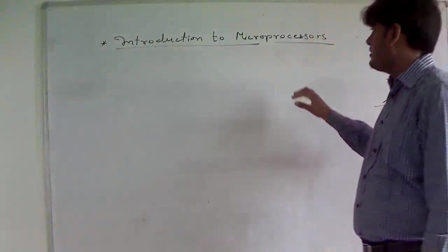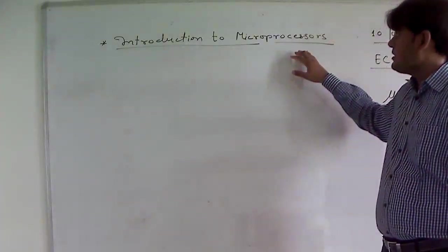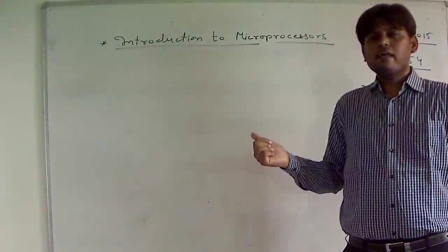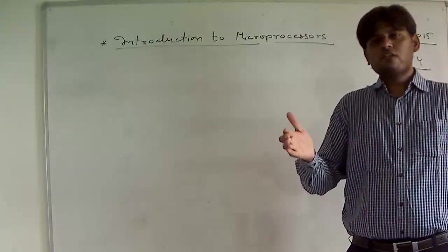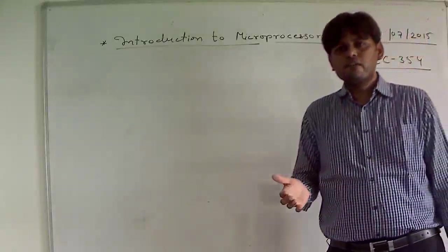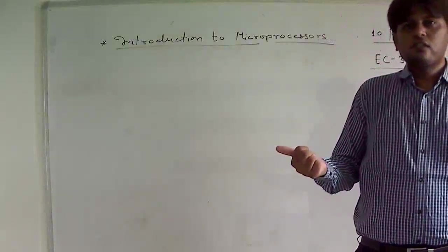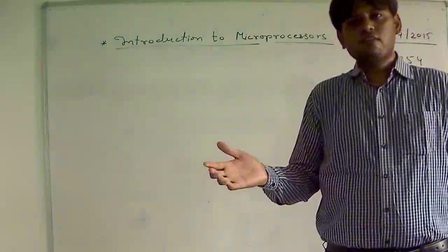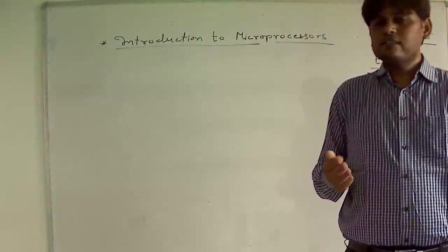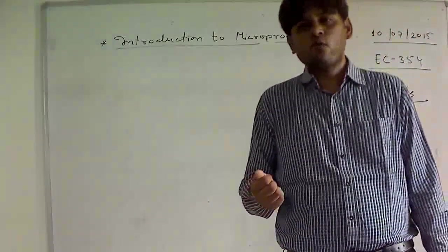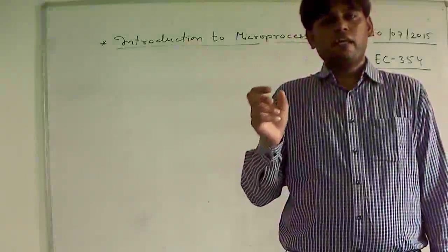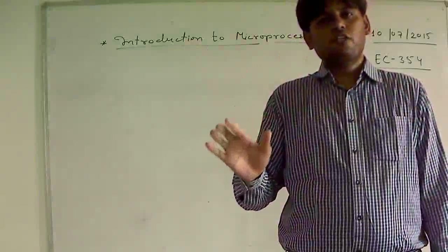If we want microprocessors to perform a certain task, then binary instructions are supposed to be given to the microprocessor. Those binary instructions which are given to the microprocessor to perform a certain task are known as machine language. So a microprocessor as a digital device can understand only 0s and 1s, or you can say it can understand only machine language.